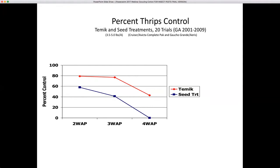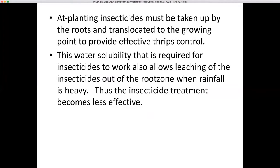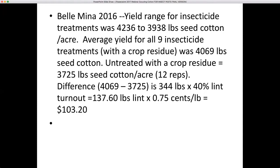So if you plant in dry conditions and the cotton plant doesn't come up for two weeks, you'll probably see significant thrips damage on cotton planted before May 5th in North Alabama and before May 1st in South Alabama, though that can vary year to year depending on weather. Planting insecticides must be taken up by the roots and translocated to the growing point to provide effective thrips control. This water solubility also allows leaching when rainfall is heavy, making the treatment less effective. Entomologists at Mississippi State are reporting about another week's residual activity out of Inferno sprays versus neonicotinoid seed treatments.